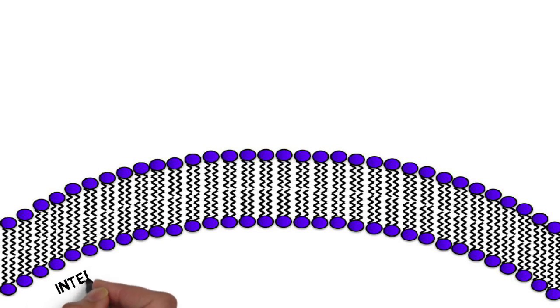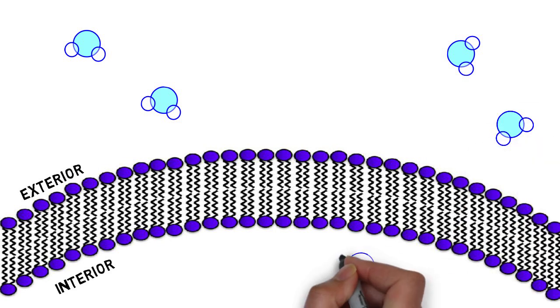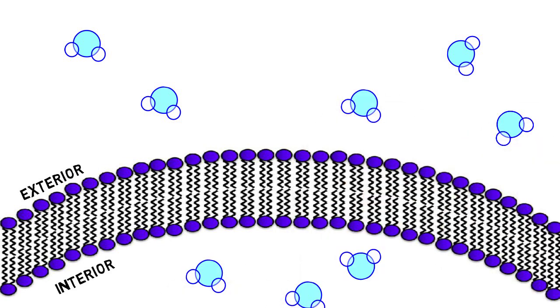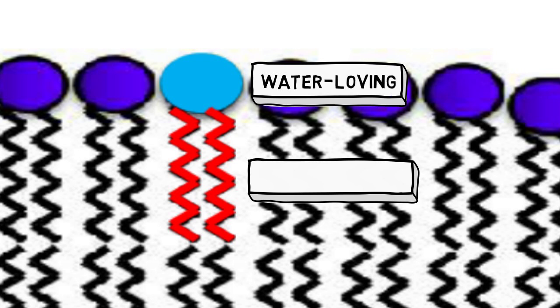Taking note that both the inside and outside of the cell are aqueous, where water forms the predominant part of the environment. Due to the difference in water affinity between the head and tail portions of the phospholipid molecules, there are only a limited number of ways in which the phospholipid molecules can arrange themselves.